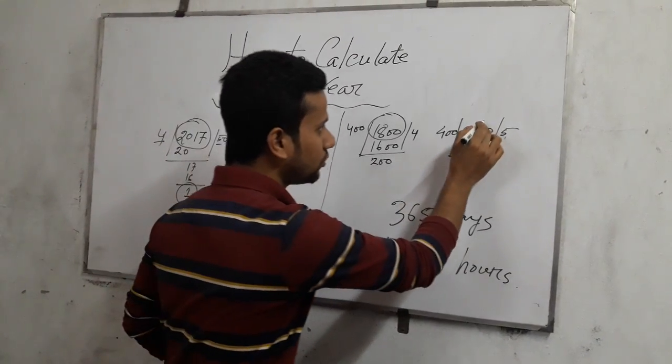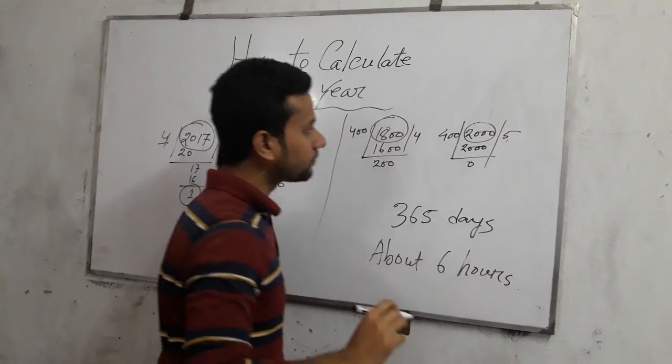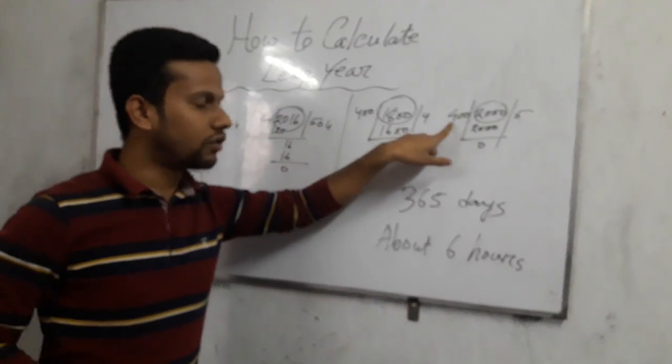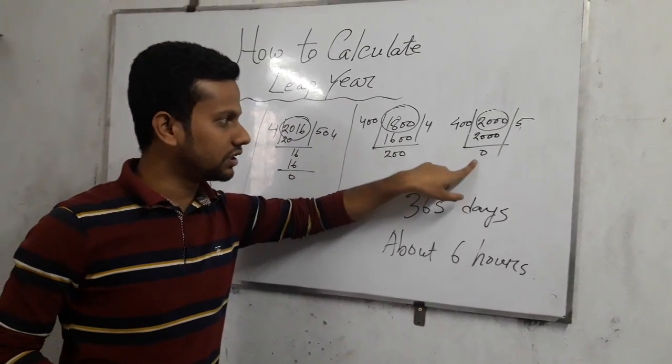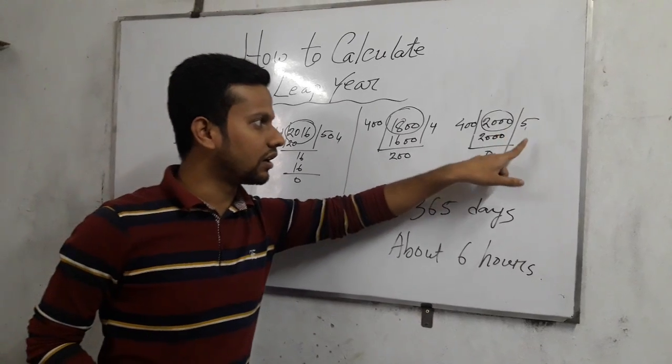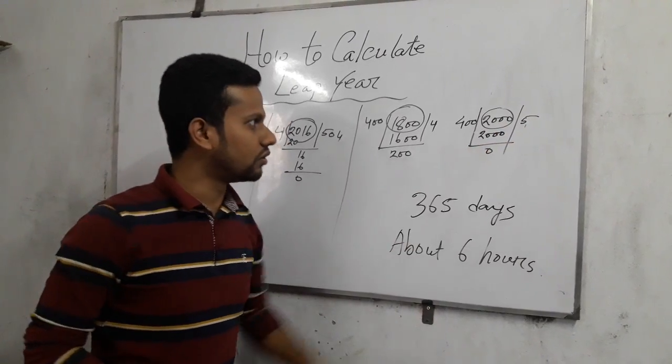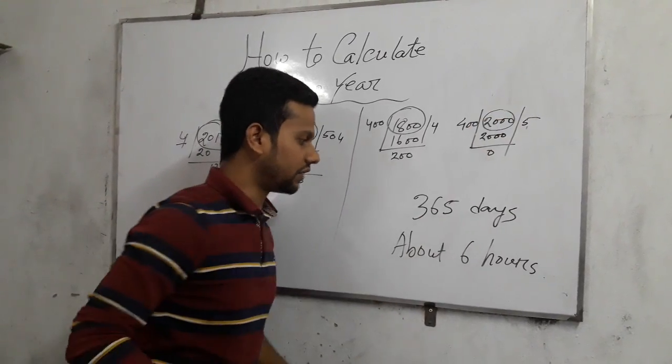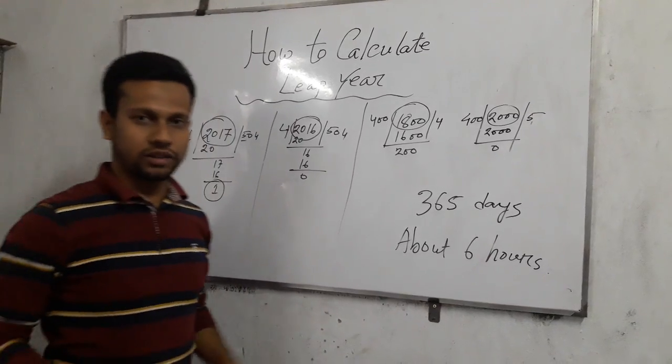Now see 2000, 2000 divided by 400, no remainder. Remainder is zero and exactly the quotient is five, no fraction. So 2000 is a leap year. Okay, thanks for watching.